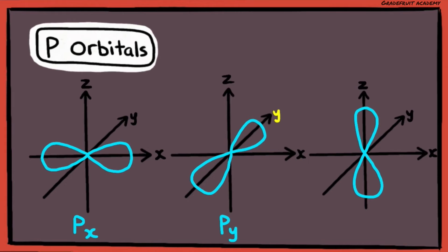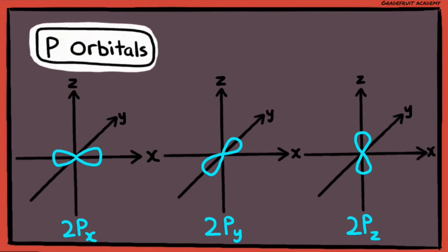And if it lies on the Y axis, it's called a PY orbital. And if it's on the Z axis, it's called a PZ orbital. Likewise, P orbitals in a larger principal quantum shell will be larger in size.